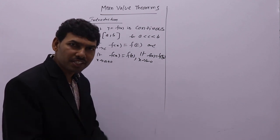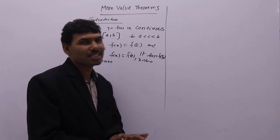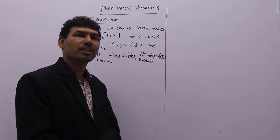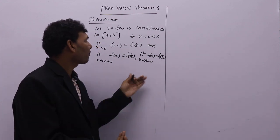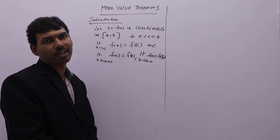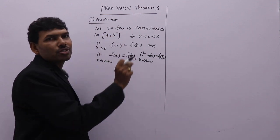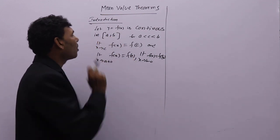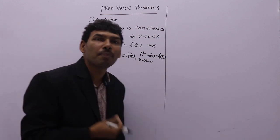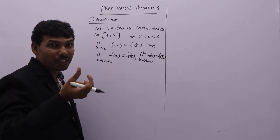First I will discuss the actual definition of continuity and derivability. Next I will discuss some shortcuts through which, without applying these formulas, you can decide whether a function is continuous or not in the given closed interval. I'll tell you the shortcuts after the actual concept. A closed interval [a, b] includes both endpoints a and b, while an open interval (a, b) excludes them.